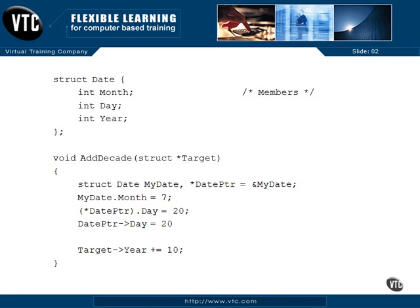Here's a little bit of code to illustrate some of this. We have our structure date with month, day, and year — just a declaration, not defining any actual variables. Here's our addDecade function again. This one does not return anything; it doesn't have to, because it takes in a structure pointer.